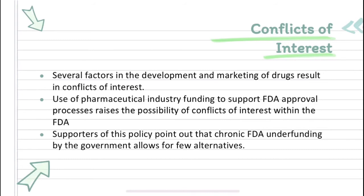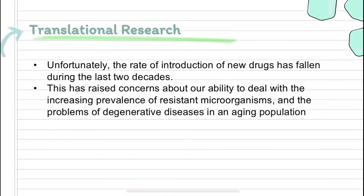Several factors in the development and marketing of drugs result in conflicts of interest. Use of pharmaceutical industry funding to support FDA approval processes raises the possibility of conflicts of interest within the FDA. Supporters of this policy point out that chronic FDA underfunding by the government allows for few alternatives. Unfortunately, the rate of introduction of new drugs has fallen during the last two decades, raising concerns about our ability to deal with the increasing prevalence of resistant microorganisms and the problems of degenerative diseases in an aging population.